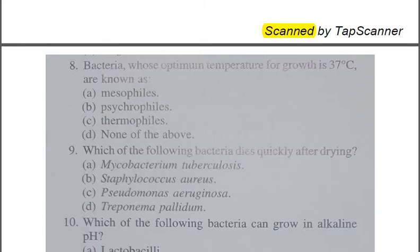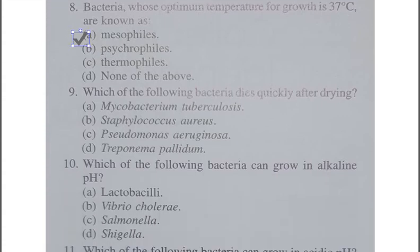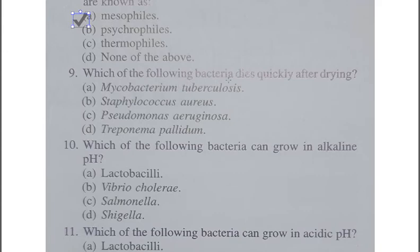Question number eight: Bacteria whose optimum temperature for growth is 37 degrees Celsius are known as — A: mesophiles, B: psychrophiles, C: thermophiles, D: none of the above. The correct answer is A, mesophiles. Mesophiles are bacteria for which the optimum temperature is between 20 and 40 degrees Celsius. Most human pathogens are mesophiles, growing at body temperature of 37 degrees Celsius.